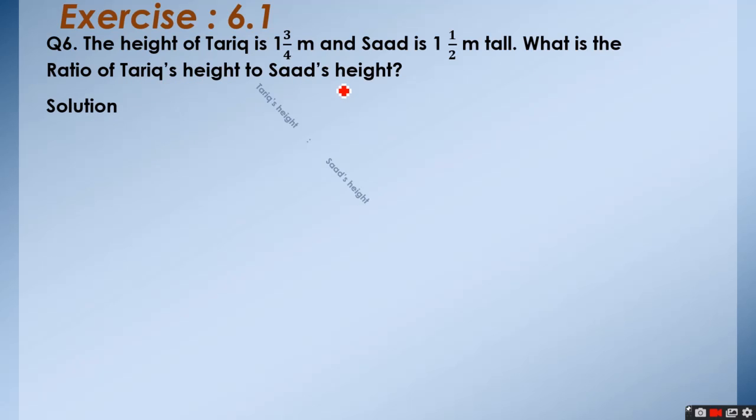So, solution. Tarek's height ratio Saad's height. Tarek's height is 1 3/4 and Saad's height is 1 1/2. First, we change this mixed fraction into improper fraction.